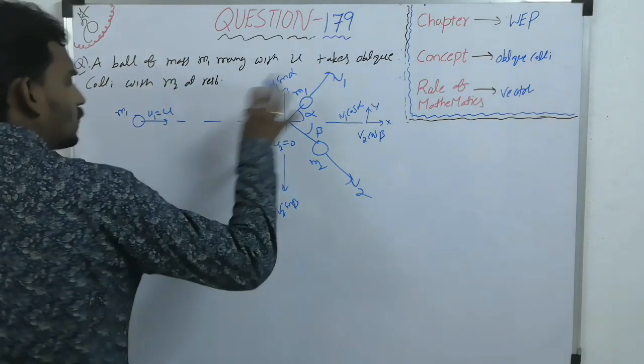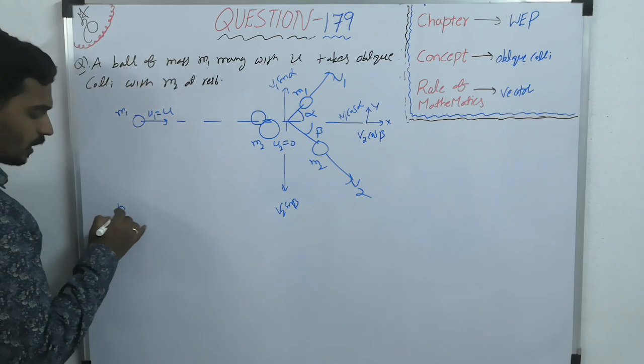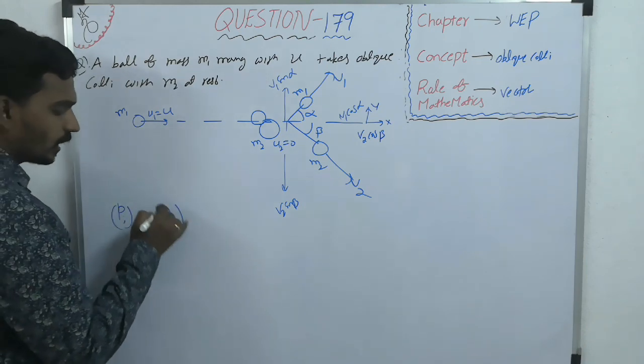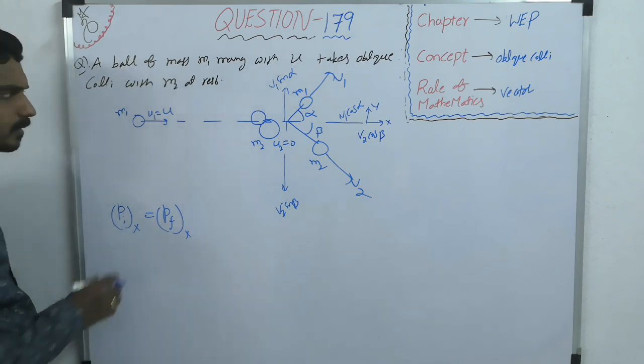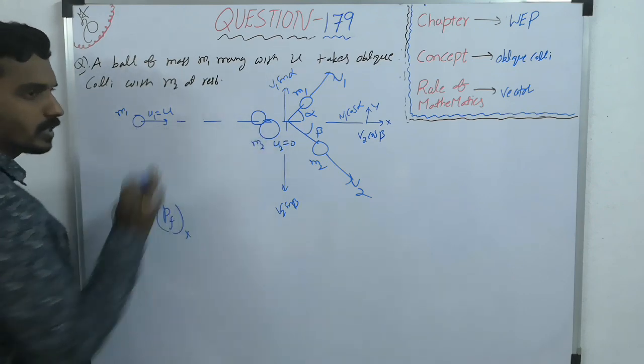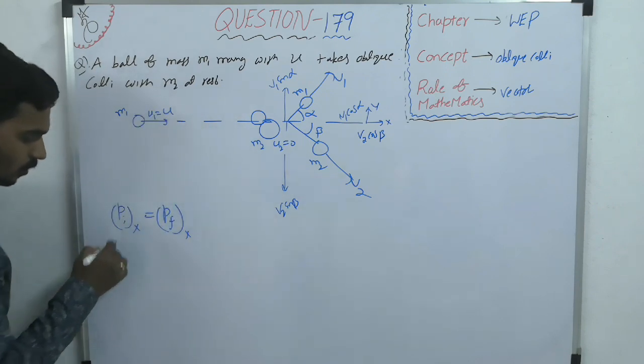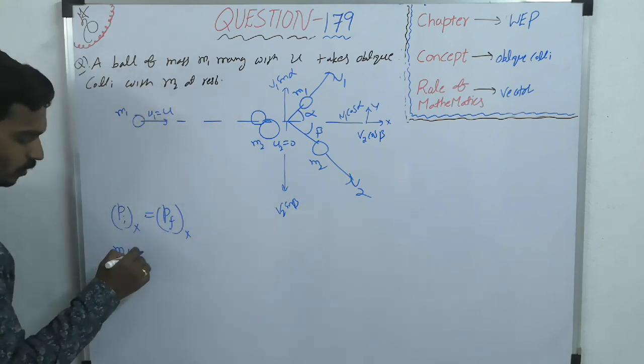Now after dividing, take initial linear momentum along X equate it to final linear momentum along X. Initially, M2 is at rest, only M1 was moving along X axis, so M1 into U.